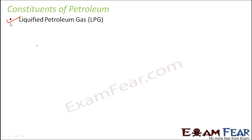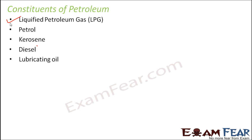Let us quickly look at the various constituents. First is LPG, that is liquefied petroleum gas — all of you are very familiar with this because LPG is what is inside the cylinders in your kitchen, which helps us in cooking. Then there is petrol, kerosene, diesel, lubricating oil, paraffin wax. So these are all various components of petroleum, and if we separate them we get each one individually.